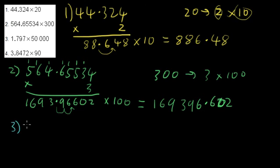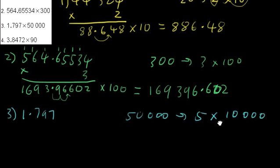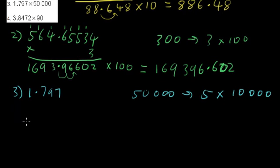Now to do the third one, we have 1.797 and we're going to want to take it and multiply it by 50,000. So instead of trying to do that, I'm going to multiply it by 5 and then I'm going to multiply it by 10,000. So let's work this out, multiply it by 5.